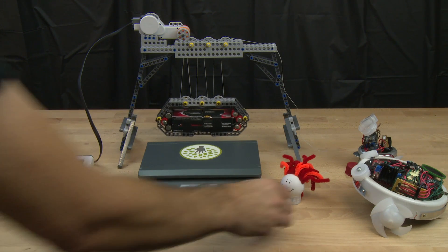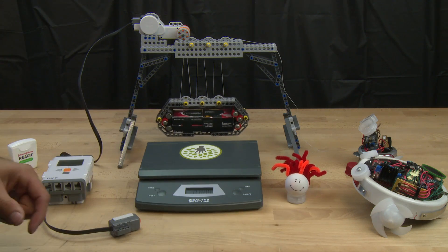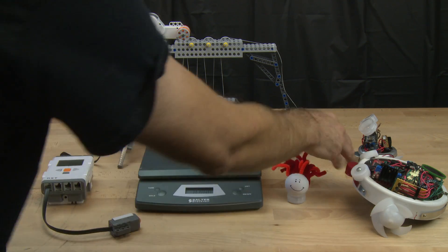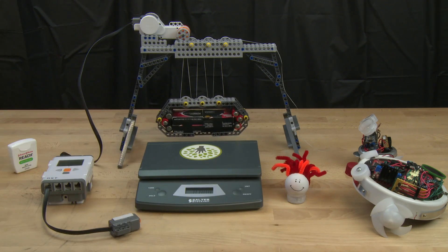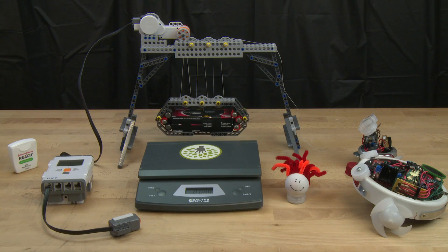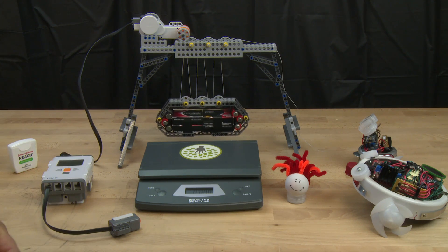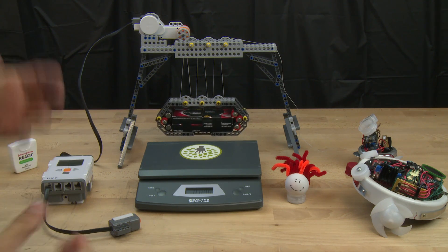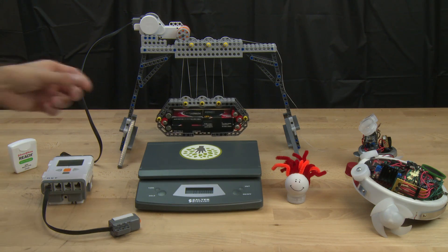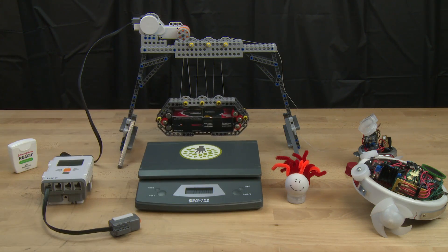All right, so our friend Jenny here, ping pong ball Jenny, invited her friends Bitsy and Spyder over to watch her simple machine creation. Now the simple machine she's built is a pulley system and she's hoping to reduce the force needed to lift these really heavy batteries by using pulleys.